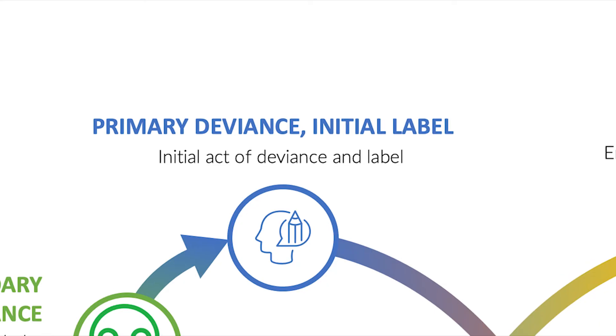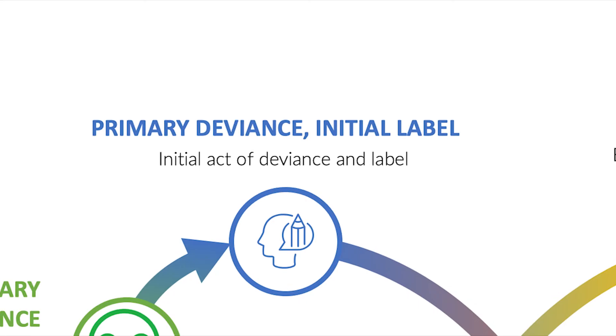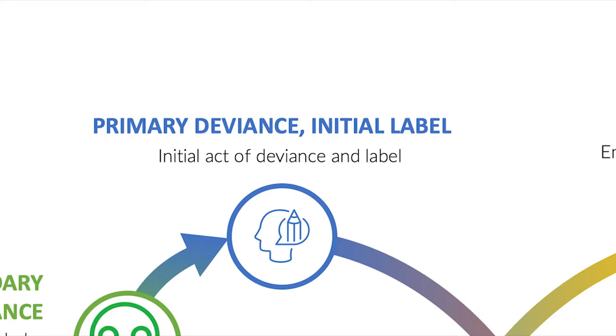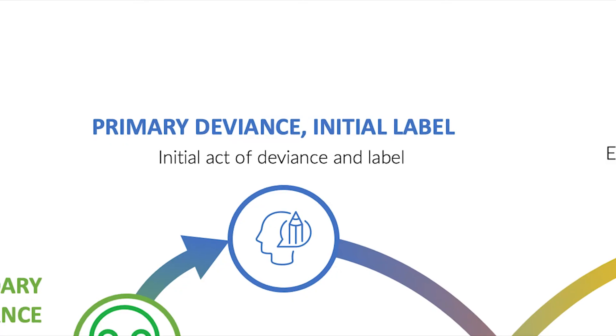This loop of primary deviance and social reaction can continue for a while. At this point, our deviance might even be a hostile reaction to the punishers. For example, my sister got to the point where she knew she was going to get in trouble for whatever minor things she did, so she started doing things wrong on purpose and engaging in bigger deviance — figuring if you're going to do the time, you might as well get the crime. At some point that cycle, especially when a degradation ceremony is involved, gets big enough that we enter into self-labeling, where we identify with and embrace the deviant label.